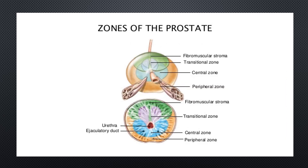The zones of the prostate include the fibromuscular stroma, transitional zone, and central zone. You have to label all these zones. In anatomy, the goal is to identify superficial structures — you need to know where each structure is located and its name. Learning functions alone is not anatomy; you must remember the names and locations of the structures.